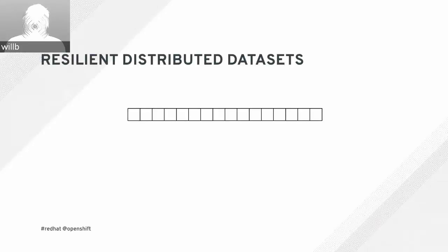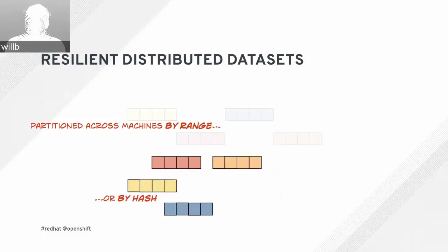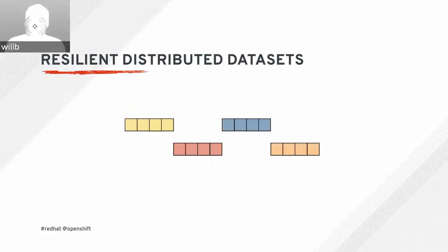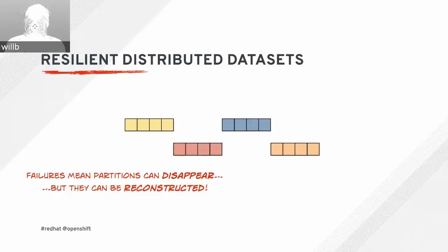Because computations only happen when they have to and because we don't actually change the underlying collection, we have two kinds of operations on these RDDs: transformations, which create new RDDs encoding a graph of dependency information to a parent distributed data set, and actions, which are where actual work gets done — something that schedules a cluster job to compute values in the RDD. These are resilient because in a distributed application we inevitably have failures, and because of immutability and laziness we always know how to reconstruct partitions when they go away.